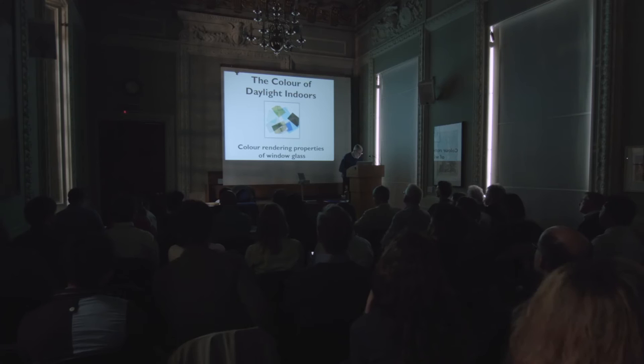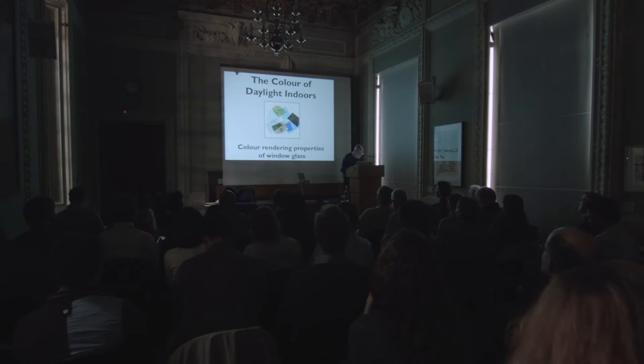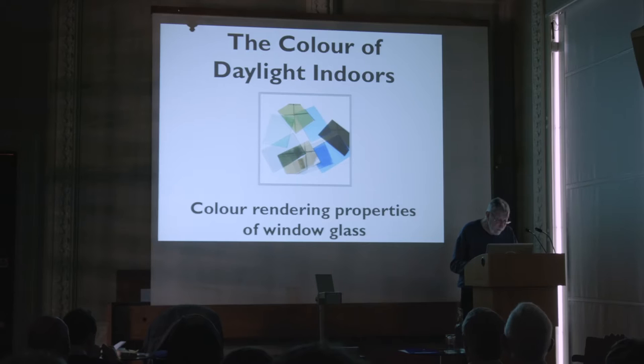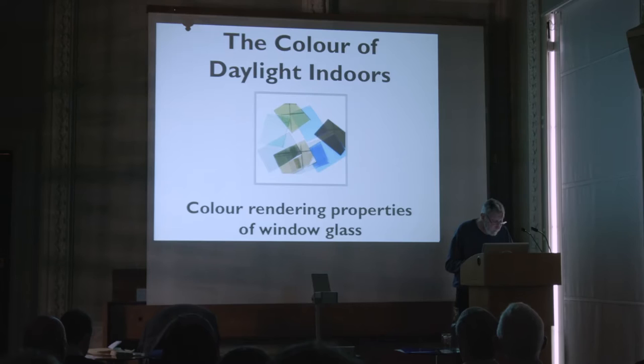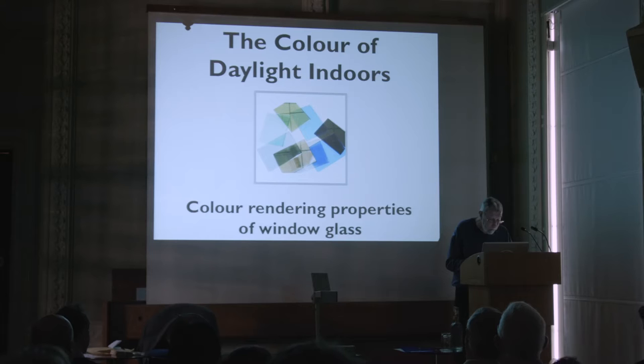Well, thank you for coming. Color rendering properties of window glass. As far as I've been able to discover, nobody's ever given a paper before about the problem of color rendering for window glass in general. It's been a non-subject. Papers appear all the time about the color rendering of LED lamps, but nothing about windows, so maybe it's time we started to think about the visual effects of filtering daylight, especially today, while the whole of the CIE color rendering system is under review and open to debate.